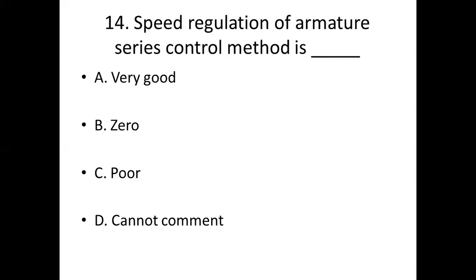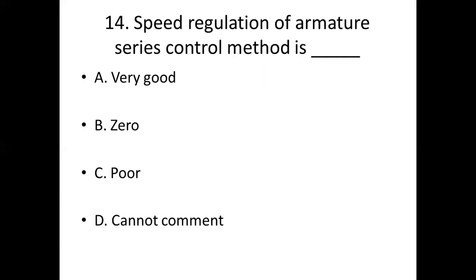Fourteenth bit. Speed regulation of the armature series control method is dash. Option A: very good. Option B: zero. Option C: poor. Option D: cannot comment. Answer: Option C, poor.